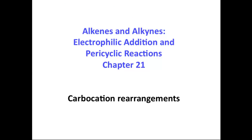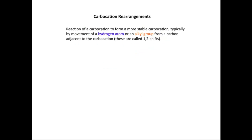We're going to discuss carbocation rearrangements, which are covered in the Alkenes and Alkynes, Electrophilic Addition and Pericyclic Reactions chapter. We'll start by defining what a carbocation rearrangement is: it's the reaction of a carbocation to form a more stable carbocation, typically by the movement of a hydrogen atom or an alkyl group from a carbon adjacent to the carbocation. These are so-called 1,2-shifts, and we'll look at an example of each.